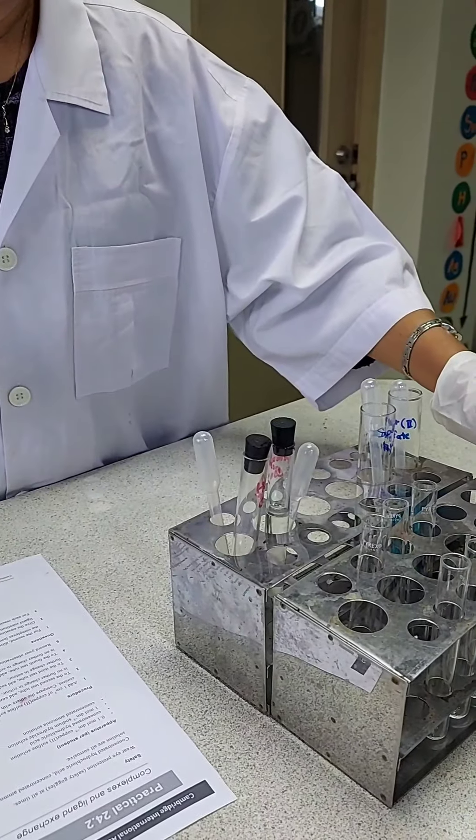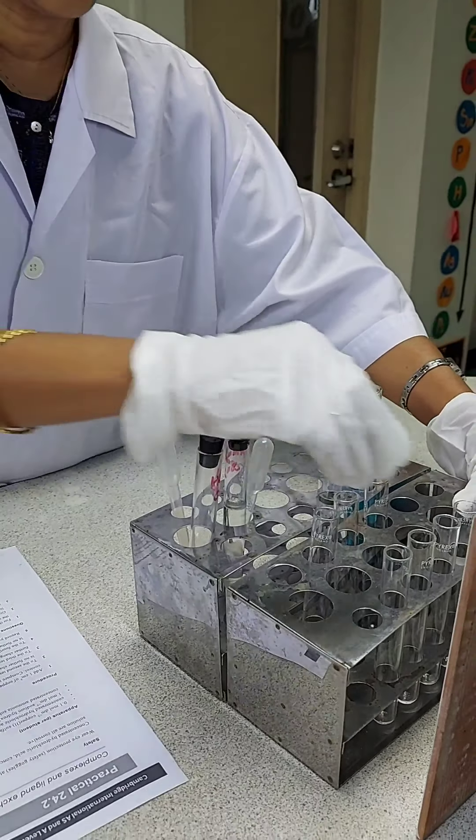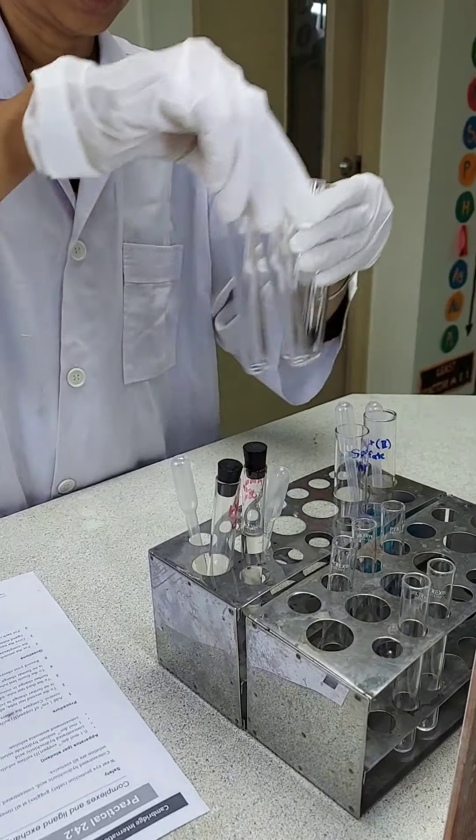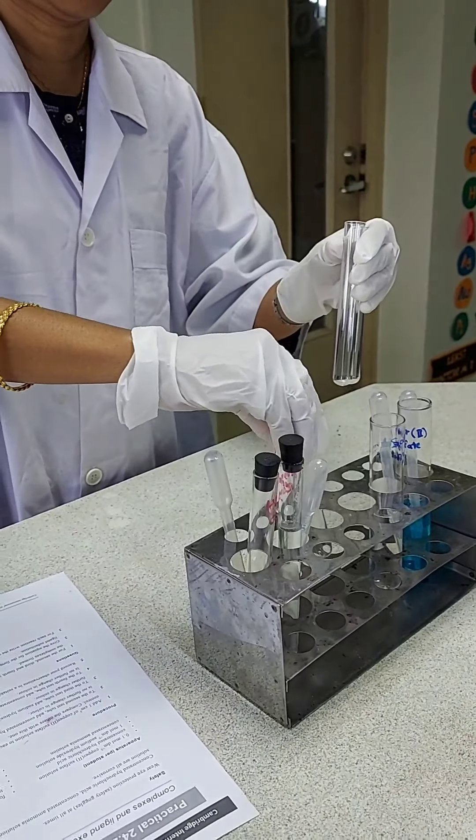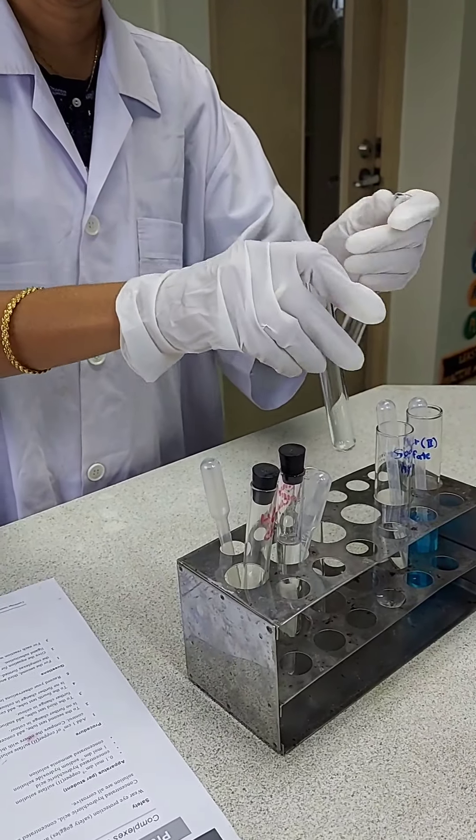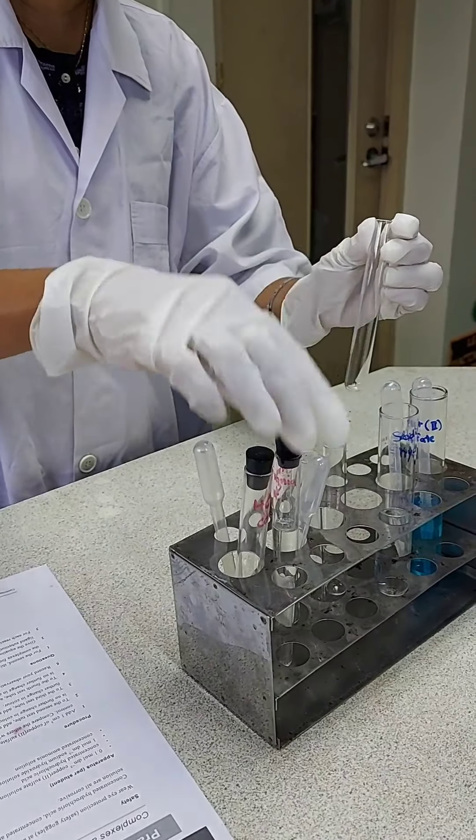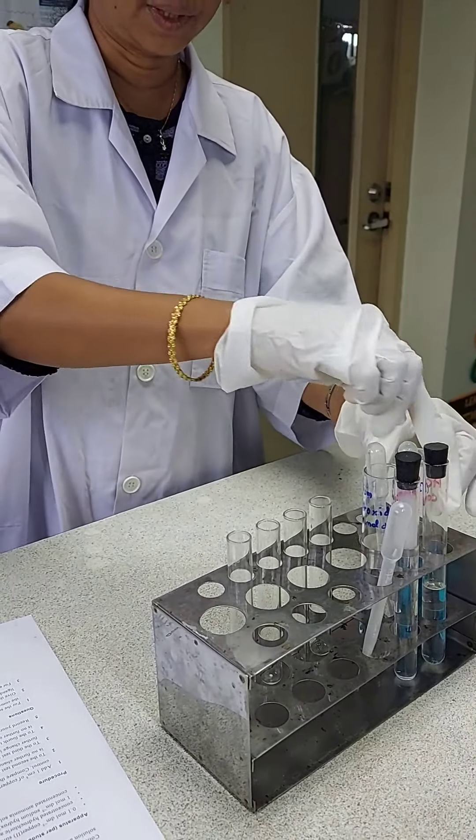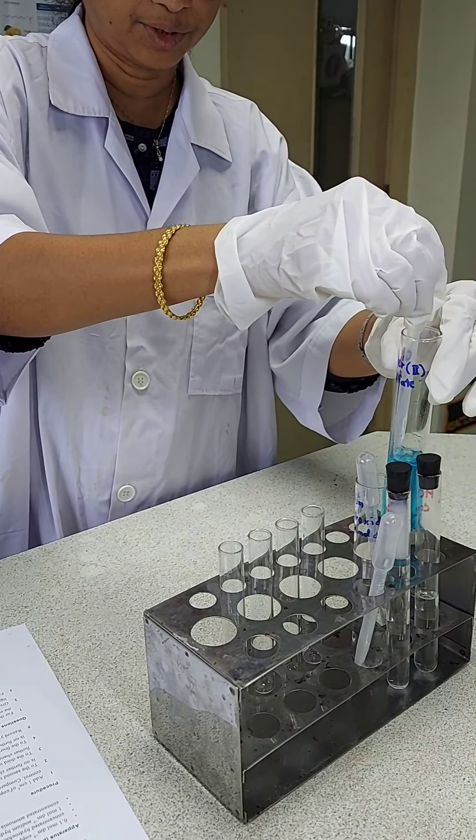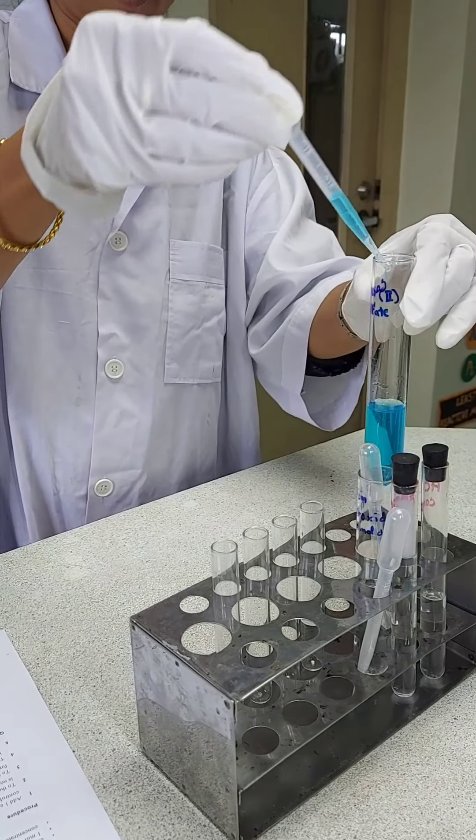What I'm going to do is take four test tubes and into each of the test tubes, I'm adding about 2 cm³ of copper sulfate solution.